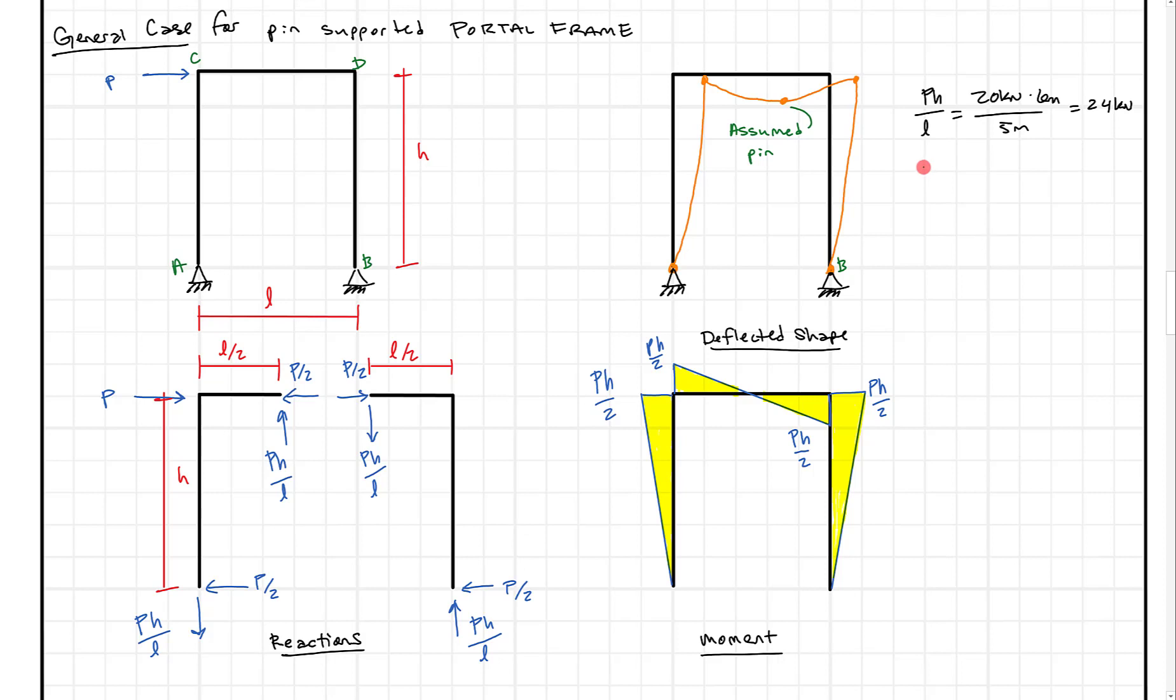Similarly, our horizontal reaction was P over 2, and what's that? Well, it's 20 kilonewtons divided by 2, so that's just 10 kilonewtons, just like what we found up above. And then here, we can look at the moment, and really, the only other thing here is the moment, and that's pH over 2. And what we get there is 20 kilonewtons times our height, which was 6 meters, divided by 2. So, 2 into 20 is 10, 10 times 6 is 60 kilonewton meters.